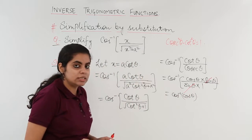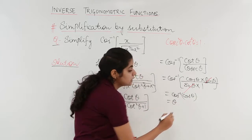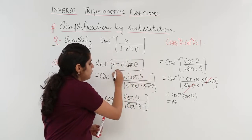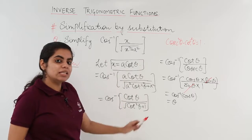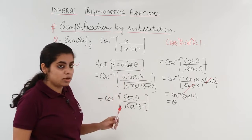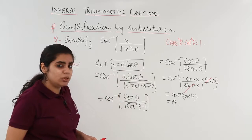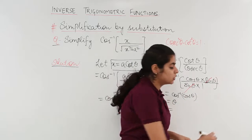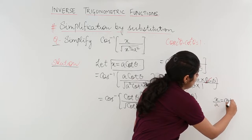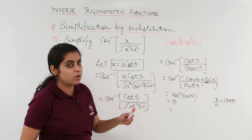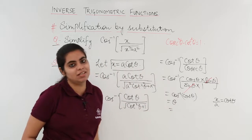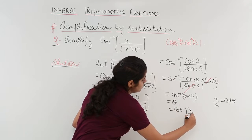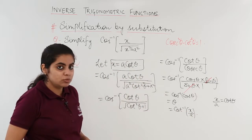So cos inverse of cos θ gives us θ. Now from our substitution, x = a·cot θ, which means x/a = cot θ, and therefore θ = cot inverse of (x/a). So the final answer is cot⁻¹(x/a).